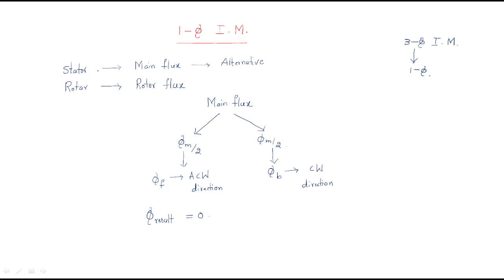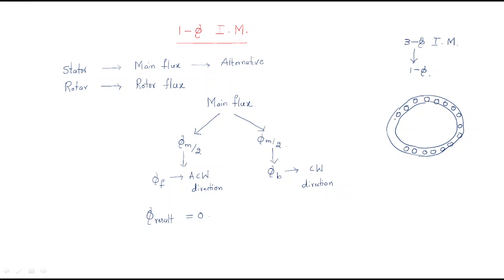Generally, the construction of a single phase induction motor is like this. The stator has some windings. In order to accommodate the windings, we provide slots in the stator. In these slots, single phase winding is placed. We then give single phase AC supply to these windings.